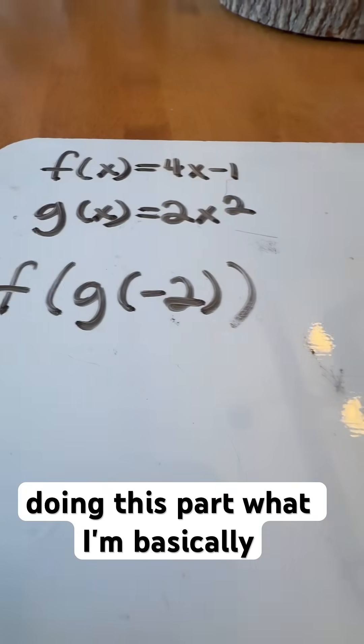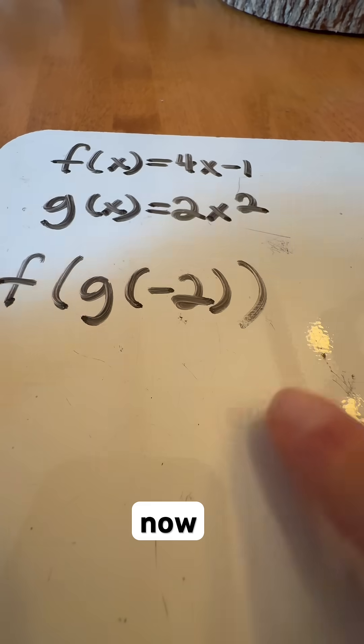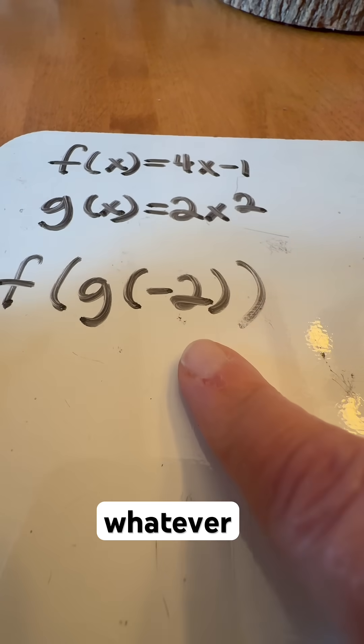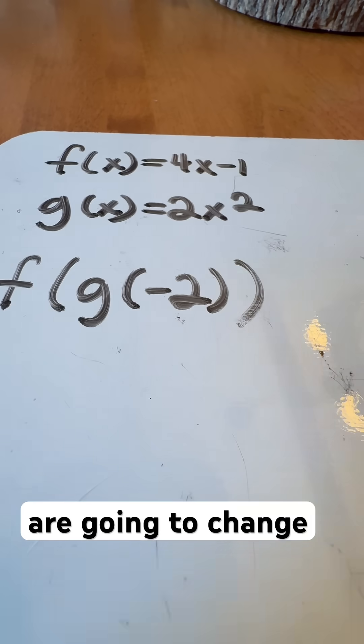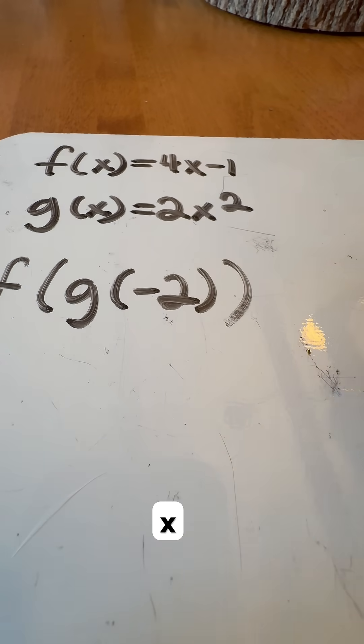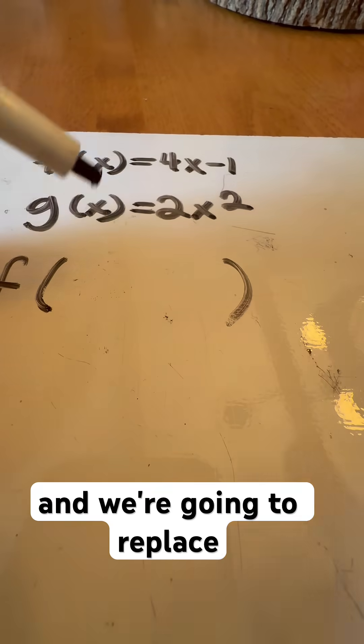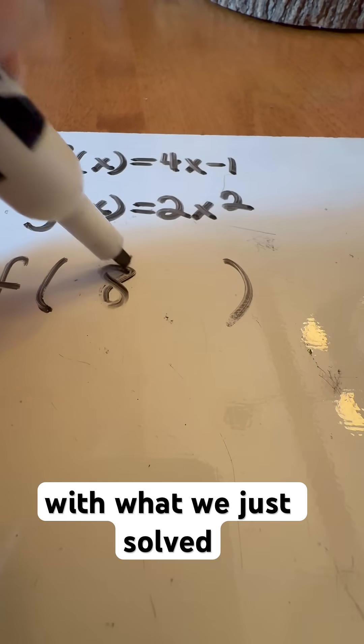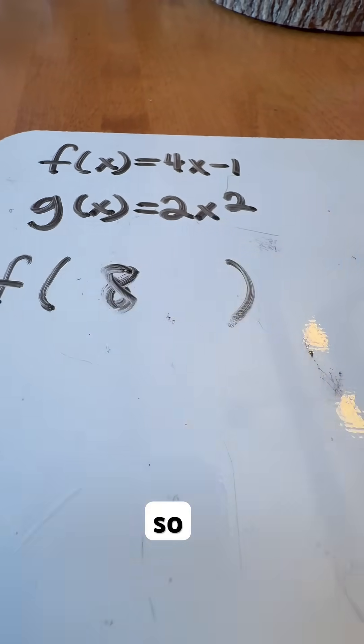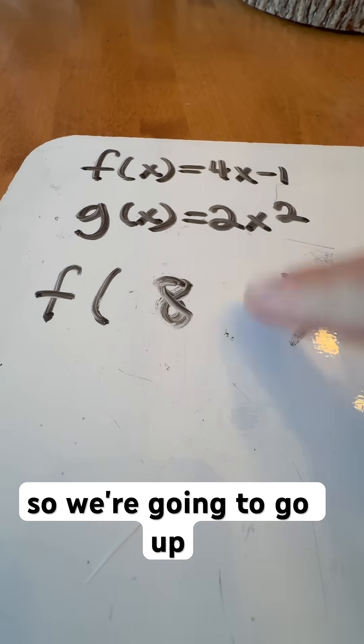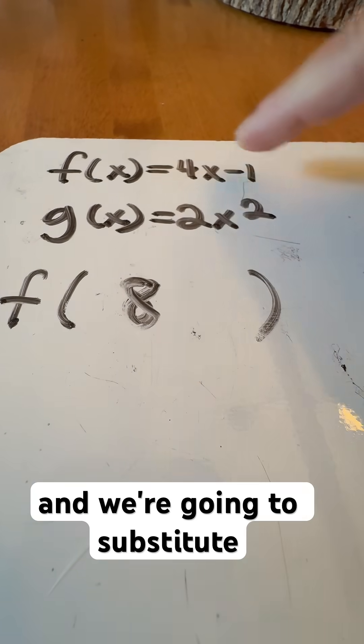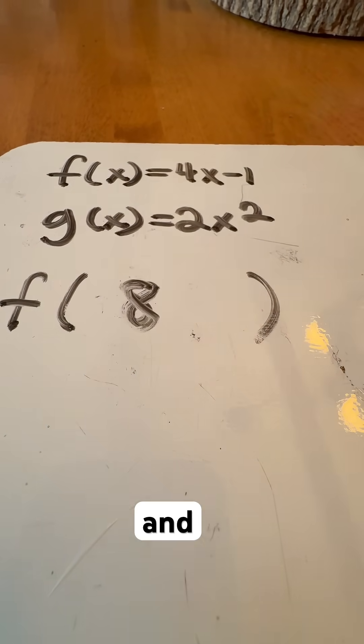So when I'm doing this part, what I'm basically saying is that for f of whatever we're giving, we're going to change that x value and replace that piece with what we just solved for, which is 8. So now we're going to say f of 8. We're going to go up to this top equation and substitute in 8 here and solve it there.